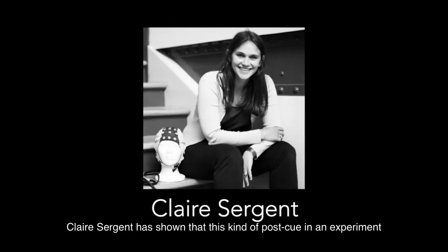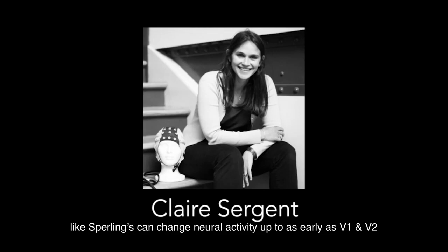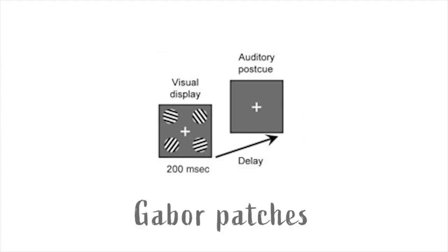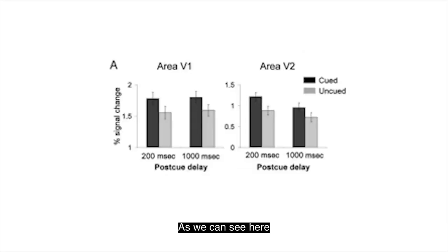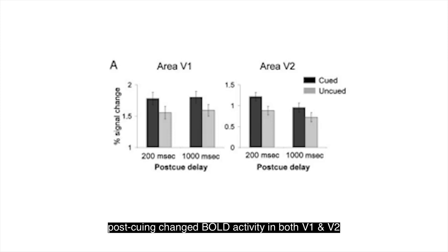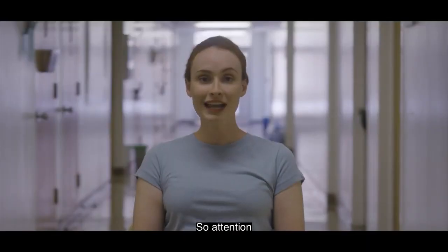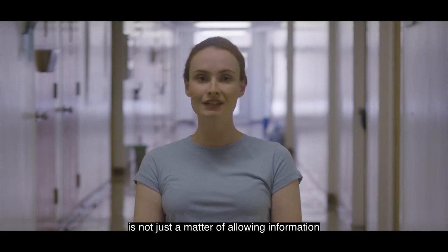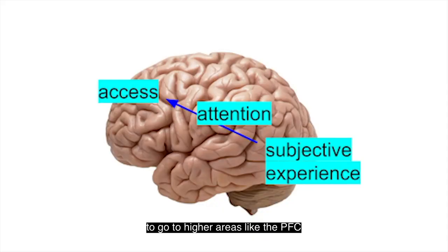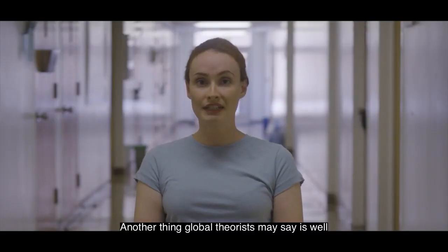Using fMRI, Claire Sargent has shown that a post-cue in an experiment like Sperling's can change neural activity as early as V1 and V2 — except instead of using letters, she used simple shapes called Gabor patches. Post-cueing changed BOLD activity in both V1 and V2: see the difference between the darker bar for activity associated with stimuli in the cued locations versus the lighter bars for stimuli in the un-cued locations. So attention, unlike what the localists would say, is not just a matter of allowing information to go from higher areas like the PFC — it changes the early sensory activity too.